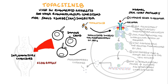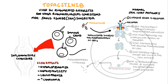Adverse effects of tofacitinib include hyperlipidemia, hepatotoxicity and leukopenia, increasing the risk of infections. It has also been associated with lymphoma. All patients should be tested for tuberculosis before starting tofacitinib. Patients should also be screened for hepatitis B and C prior to starting tofacitinib, since this medication may increase the risk of reactivation of these infections. There is also further risk of herpes zoster in patients using kinase inhibitors.